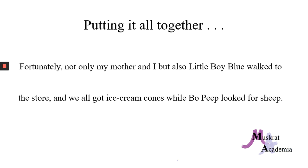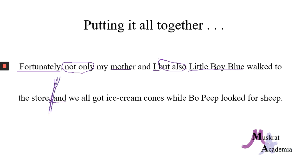Let's put it all together: Fortunately, not only my mother and I, but also little boy blue, walked to the store, and we all got ice cream cones. Bo Peep looked for sheep. This is one long sentence. Fortunately is acting as an adverb modifying the entire clause. We also have not only/but also as our conjunctions. Our subjects are mother, I, and little boy blue. When we get to the comma and then and, that's another conjunction, so we cut off the first independent clause there. Our verb is walked, and to the store is a prepositional phrase with to as the preposition and store as the noun of the preposition.